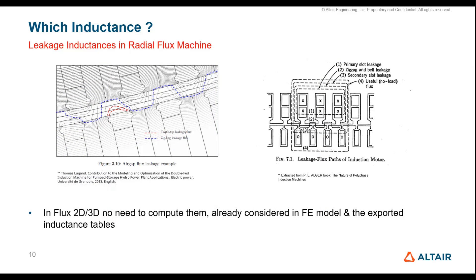Let's look at leakage inductances, with focus on radial flux machines. When considering the cross-section of the machine we can see leakage inductances on the stator slots, and if there are slots on the rotor, leakage inductances there as well. This image is extracted from Alger's book, and from a PhD thesis we can see a beautiful picture of zigzag leakage magnetic flux giving the zigzag leakage inductance. There is also leakage flux between the two sides. These are difficult to compute, but the good thing is that when using finite element computation, all these leakage inductances are already taken into account.